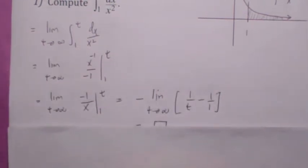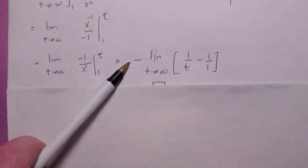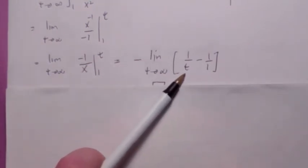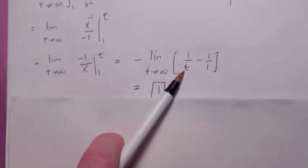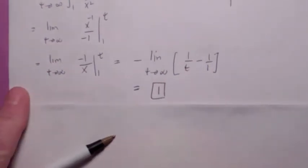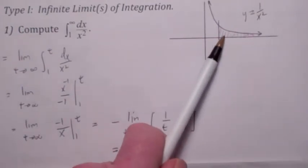When we integrate dx over x squared, we get x to the negative 1 over negative 1, evaluated from 1 to t. So what you end up with is negative 1 over x from 1 to t. Factoring the negative 1 out, when we evaluate, we get the limit as t goes to infinity of 1 over t minus 1. As t goes to infinity, this term goes to 0, so you get 1. That says the area under this curve equals 1.